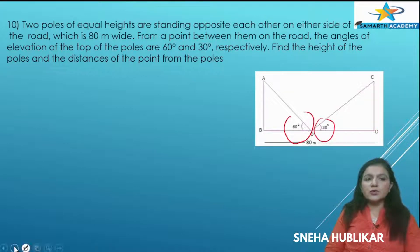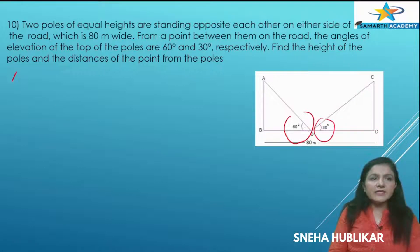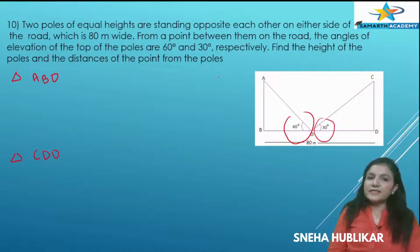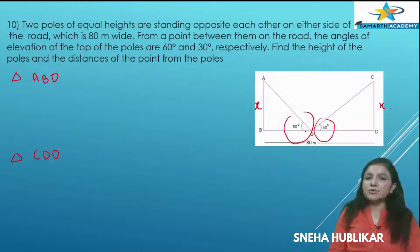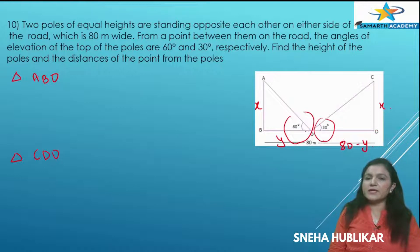We can see that there are two triangles: triangle ABO and triangle CDO. AB and CD are equal, so let us consider the height of the poles as X and let the distance BO be Y. So OD will be 80 minus Y.